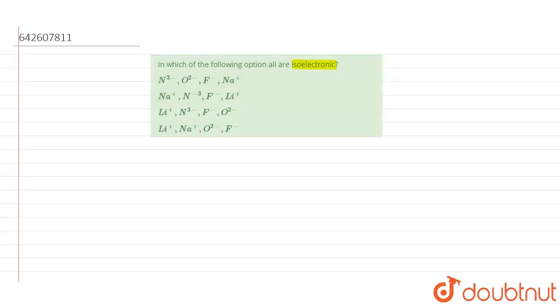For the first option, for N, the electronic configuration is 1s² 2s² 2p³. Okay, so for N³⁻